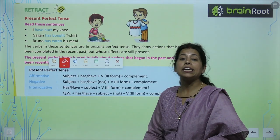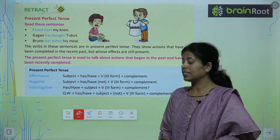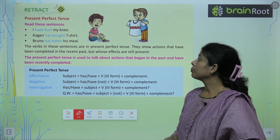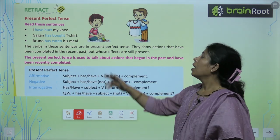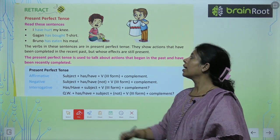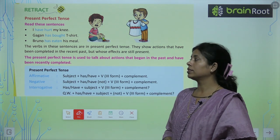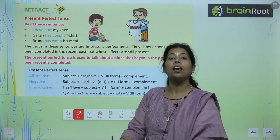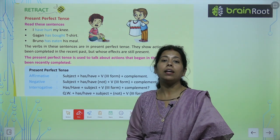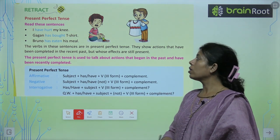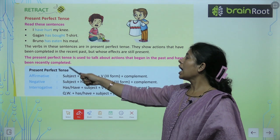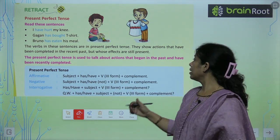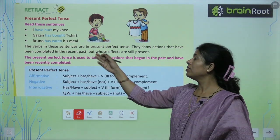Present perfect tense. Read these sentences: I have hurt my knee. Gagan has bought a t-shirt. Bruno has eaten his meals. The present perfect tense is used to talk about actions that begin in the past and have been recently completed.